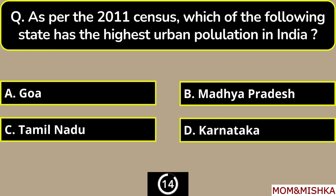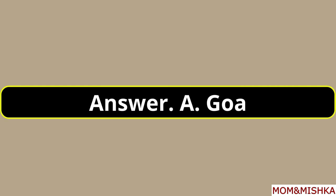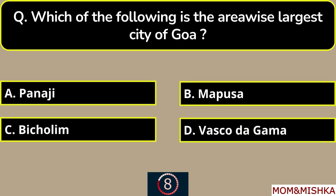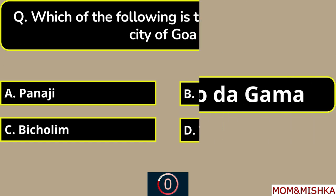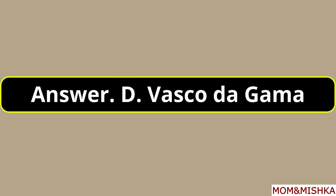As per the 2011 census, which of the following states has the highest urban population in India? Goa, option A. Which of the following is the area-wise largest city of Goa? It's Vasco da Gama, option D.